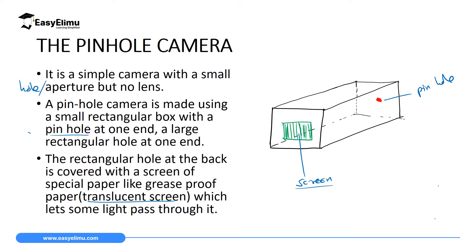To form images, you place an object on the far end where the pinhole is. You will be observing from the screen end — that is where your eye is positioned. Your work is only to observe the screen as the pinhole forms the images. The light from the object comes into the pinhole and travels to the screen where you can see it.